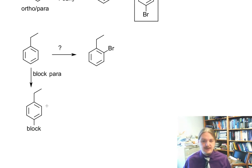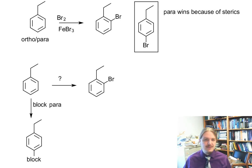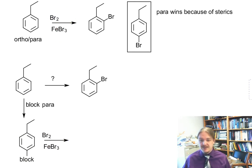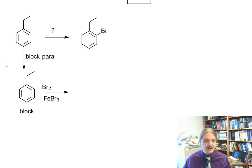Block the para position somehow. Now the ethyl group is still there. It's still an ortho para director, but the para position is blocked. So now we're going to do our bromination. And because the para position is blocked, ortho is the only thing left. And then we are going to do something afterwards to remove the block.